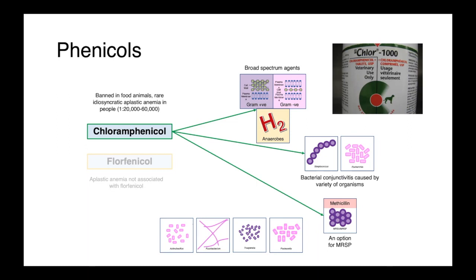In veterinary medicine, it may also be a very useful treatment against methicillin-resistant staphylococci, particularly MRSP in companion animals. But despite these useful microbiological properties, it is associated with a rare idiosyncratic aplastic anemia in people, which has severely limited its use.